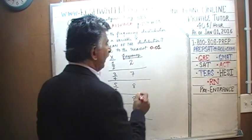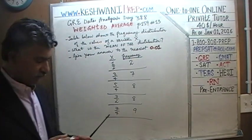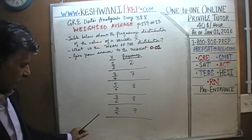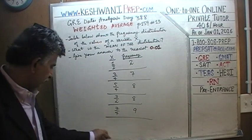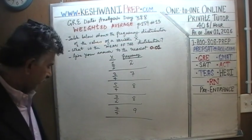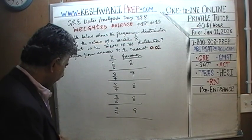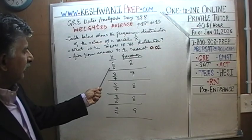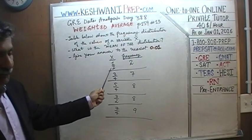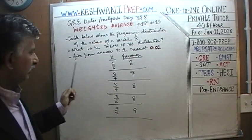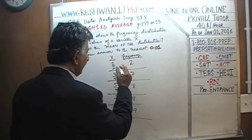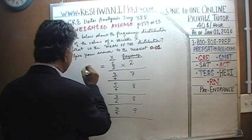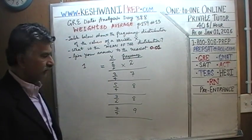In other words, they ask us to give the answer to the nearest hundredth — they don't say that, but that's what it means. The first one is very simple. If one-half appears two times, two times one-half is just one. There is nothing to it — two times one-half is just one.